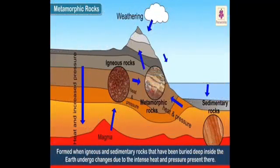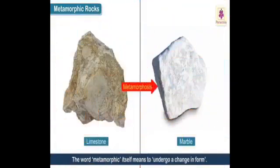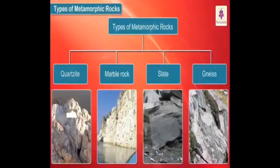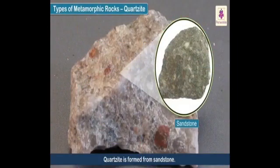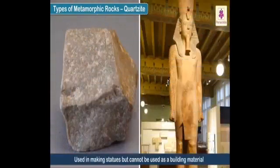Metamorphic rocks are formed when igneous and sedimentary rocks buried deep inside the earth undergo change due to intense heat and pressure. The word metamorphic itself means to undergo a change in form. Types of metamorphic rocks include quartzite. Quartzite is formed from sandstone. It is used in making statues, but being a very hard material, it cannot be used as a building material.